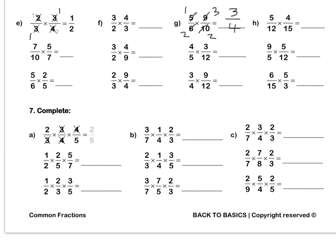Question 7: 2 thirds times 3 quarters times 4 fifths. We divide top and bottom by 3 to get 1 and 1. We are not done yet. We have a 4 and a 4 that we can also divide top and bottom by to get 1 and 1. Then when we multiply through, we are left with 2 over 5. Press pause to complete this question by yourself.